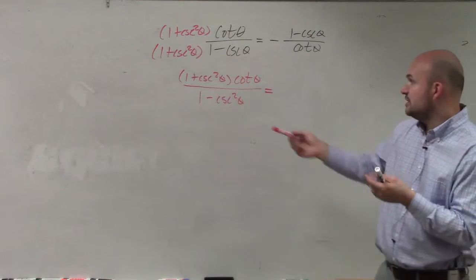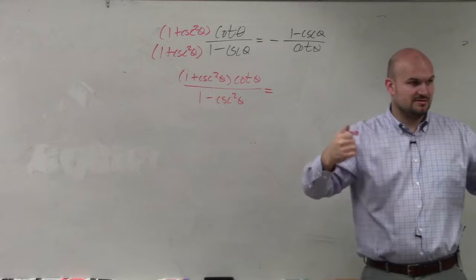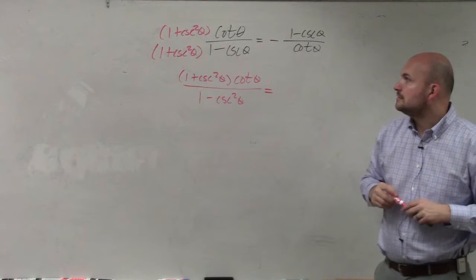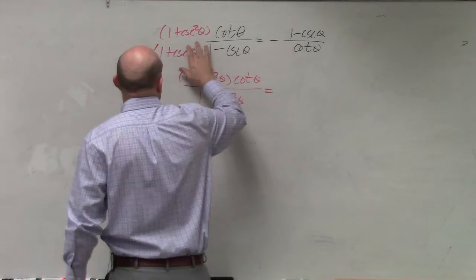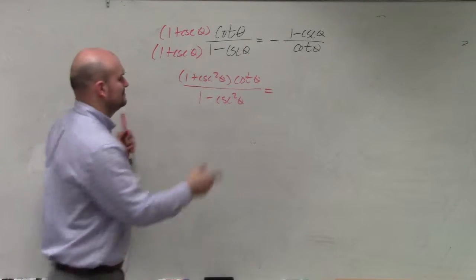Difference of two squares. You have a binomial times a binomial. So x plus... That's not supposed to be squared. I was thinking ahead, right?